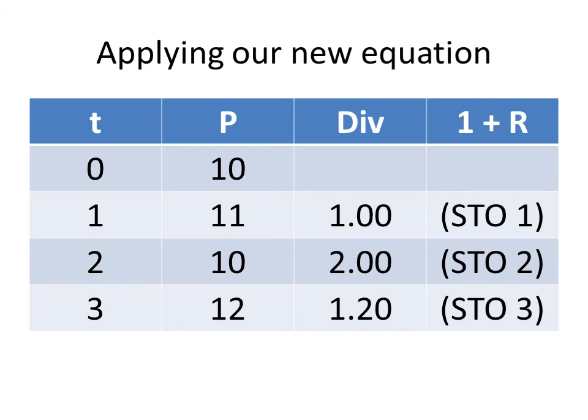And then divide by the price at time 2, which is 10. So we've got 13.2 divided by 10, which gives us 1.32. And I want you to hit store 3. So now we should be able to clear out our calculator and say recall 1 and see it say 1.2.